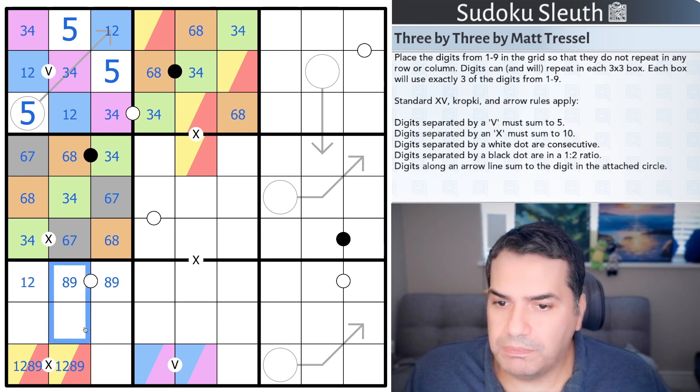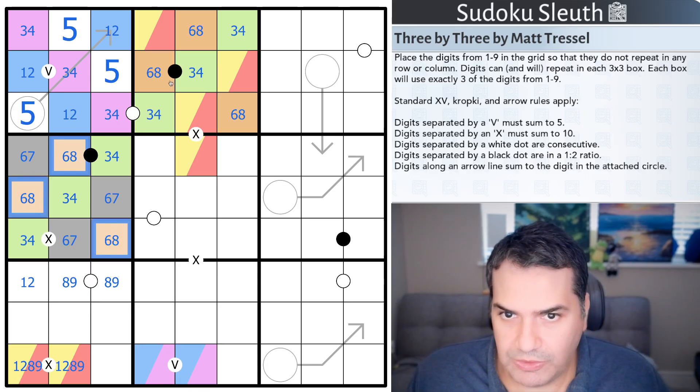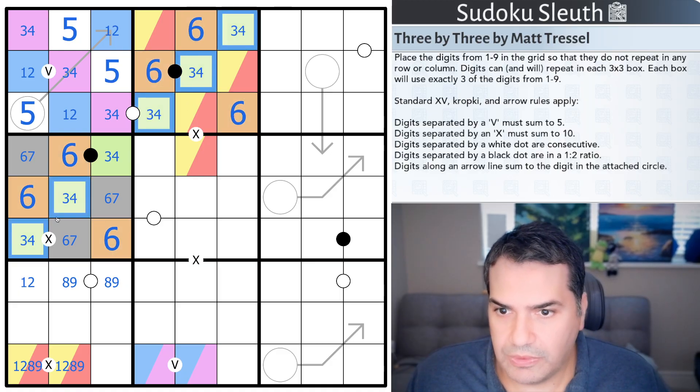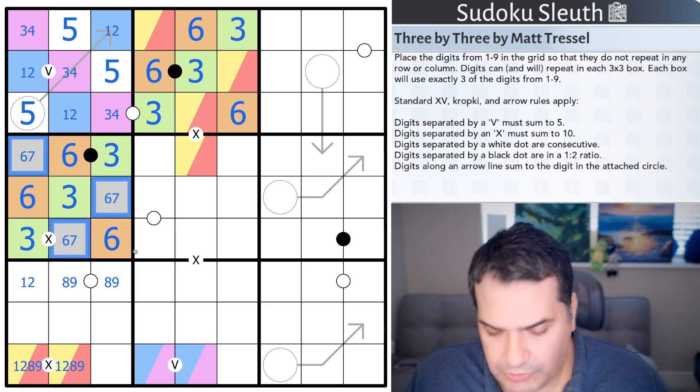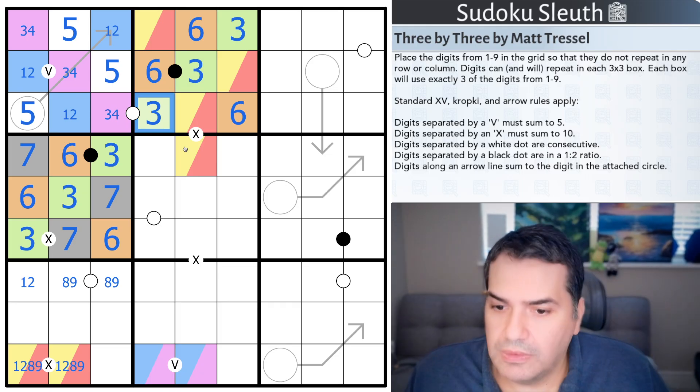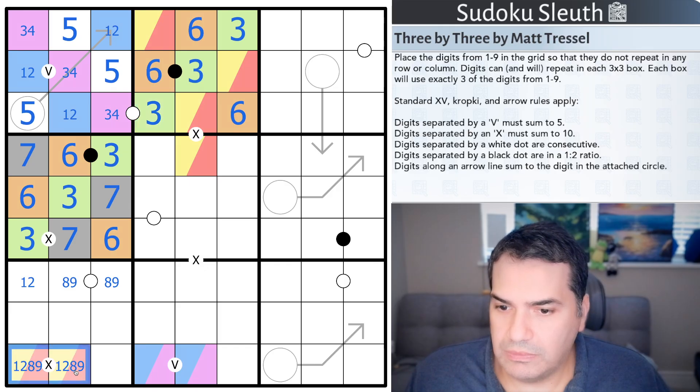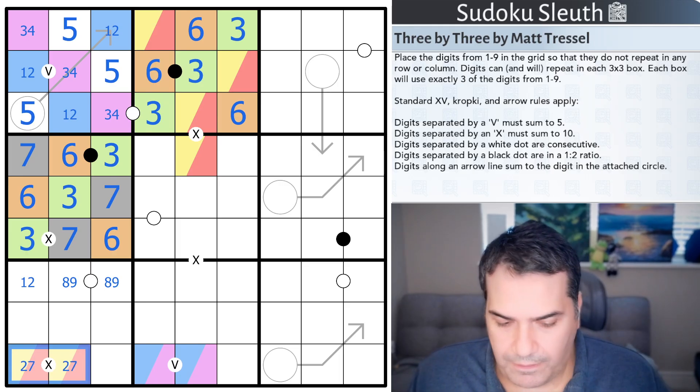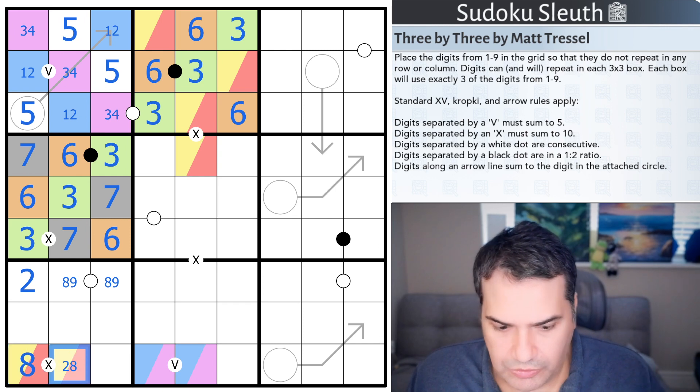But because I've got a pair of 8, 9s, that can't be an 8 anymore. So, that would have to be... Orange has to be 6. Green has to be 3. Its counterpart would have to be a 7. Remember, whatever yellow is adds up to a 5 with the 3. So, yellow has to be a 2.